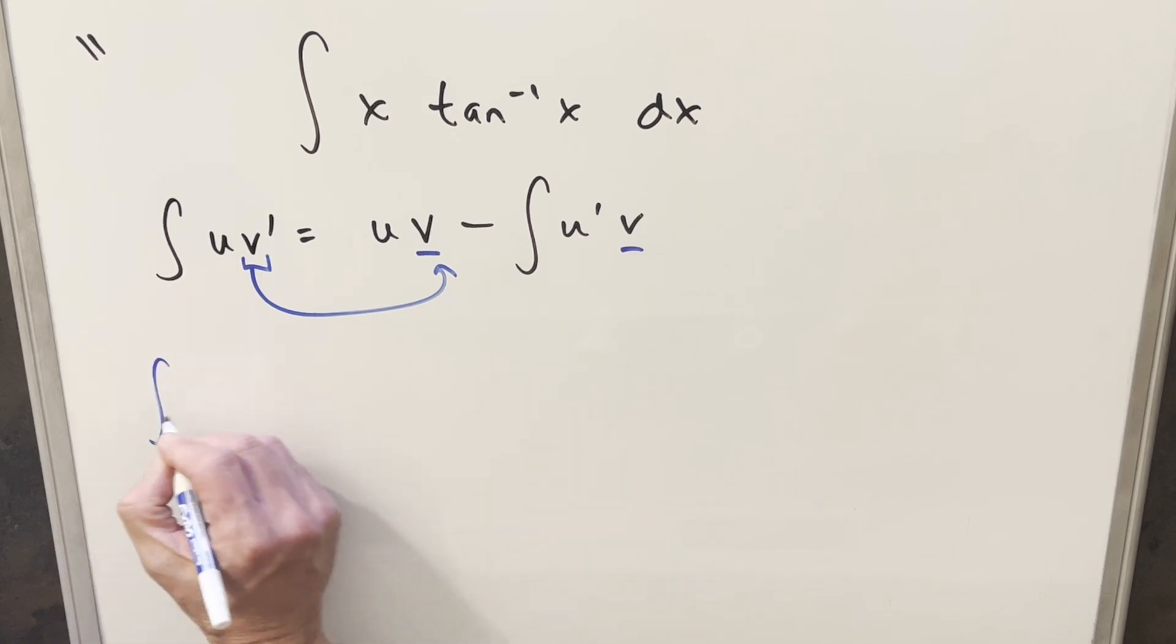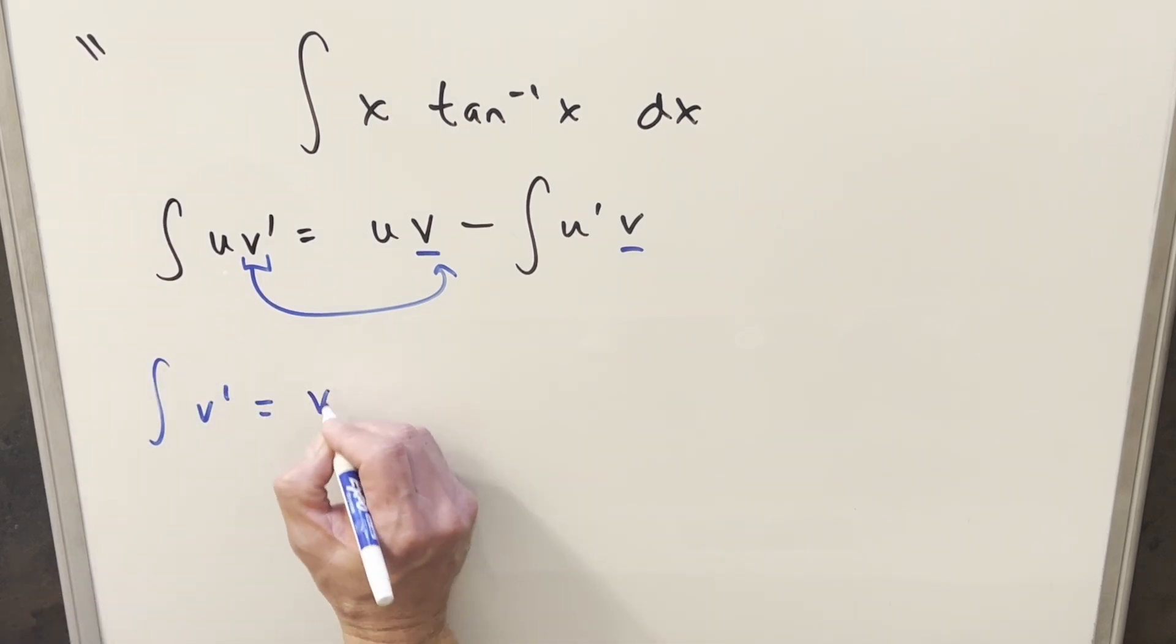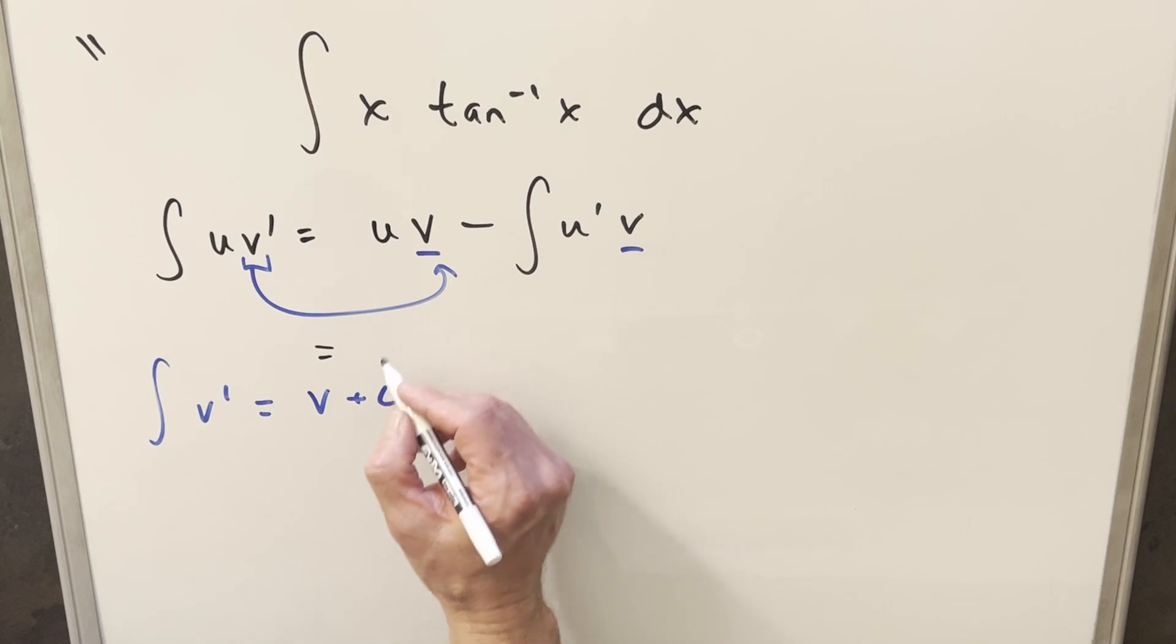But when you do that and you integrate v prime, well technically you don't just get v, you actually get v plus c. So let's go back to our integration by parts formula and see what happens if we plug in v plus c and we use that instead of just v.